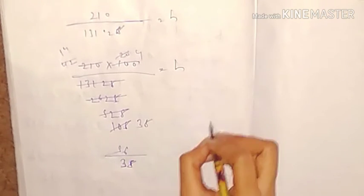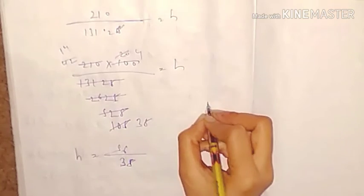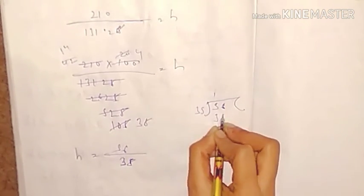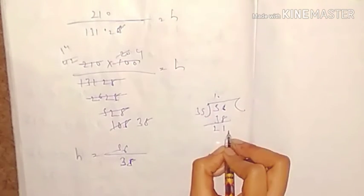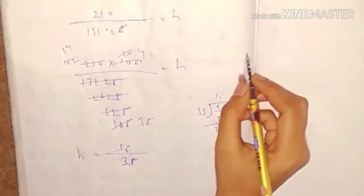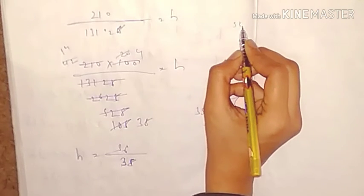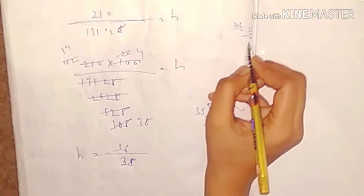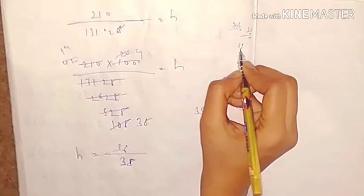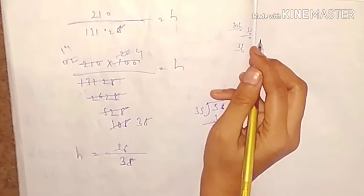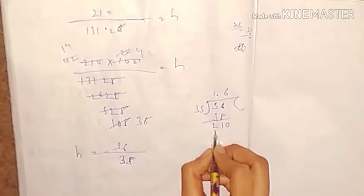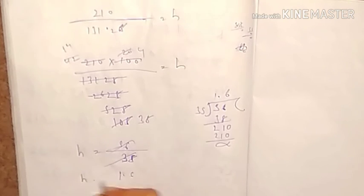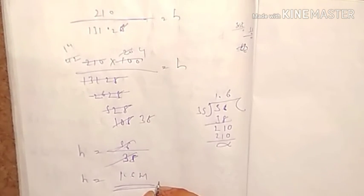Now we can cancel and simplify. After cancellation, h equals 1.6 meters. This is our answer. The height of the embankment is 1.6 meters.